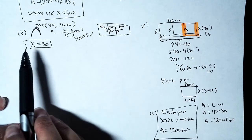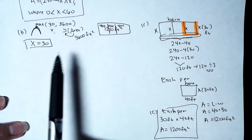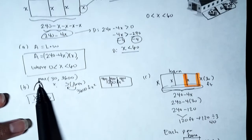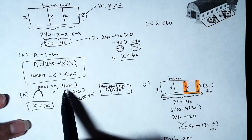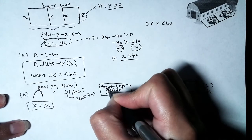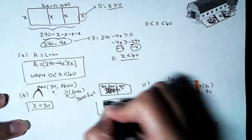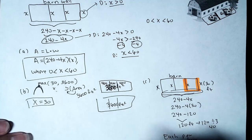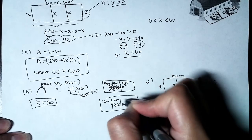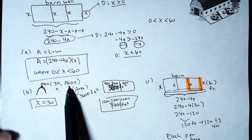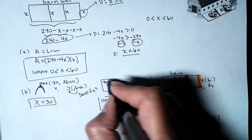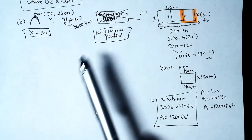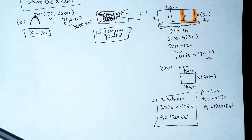Going back to correct Part B: I had initially written the wrong combined area. The correct combined area for all three pens is 3600 square feet, and each individual pen has an area of 1200 square feet. Sorry for the error — this is what happens when you go off the agenda. Thanks guys!